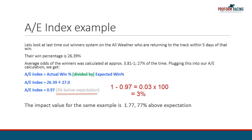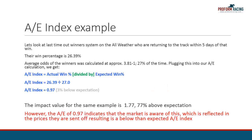The impact value for the same example is 1.77, which is 77% above expectation. However, the AE of 0.97 indicates that the market is aware of this, which is reflected in the prices they are sent off at, resulting in a below than expected AE Index.